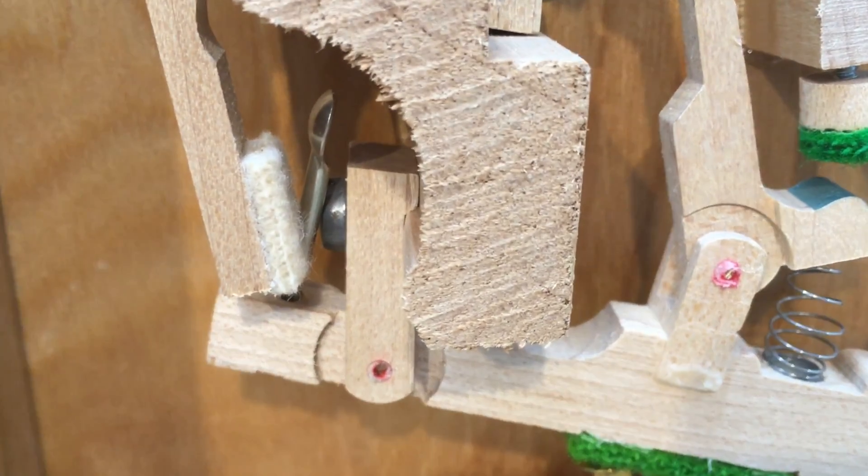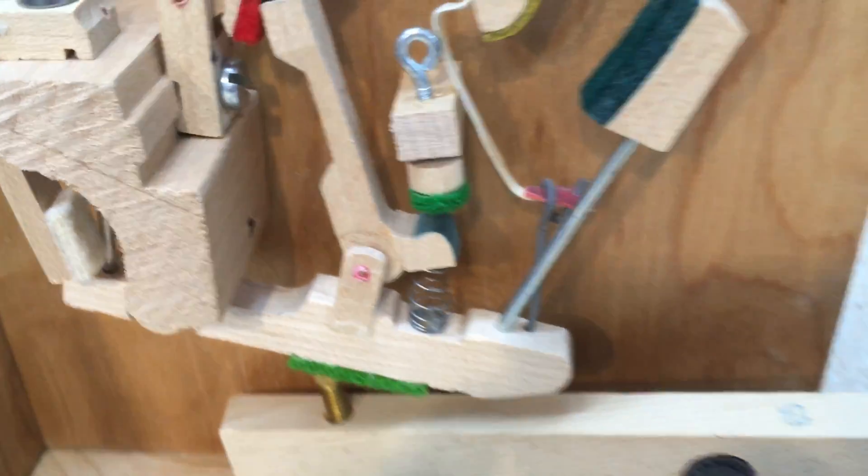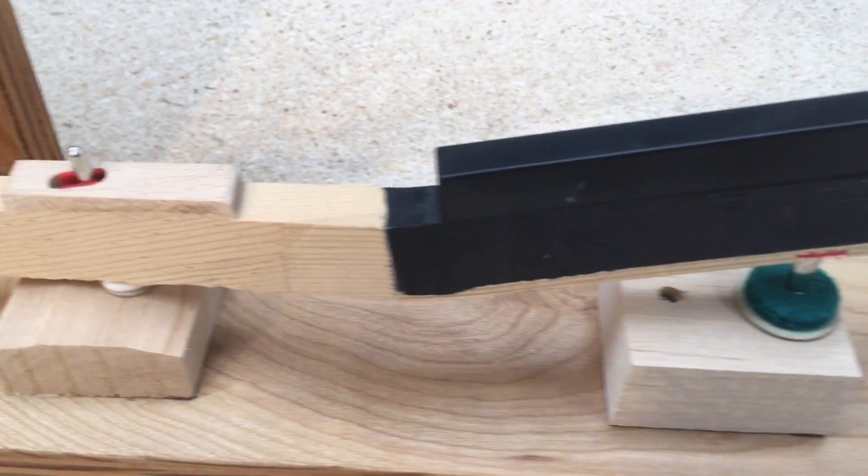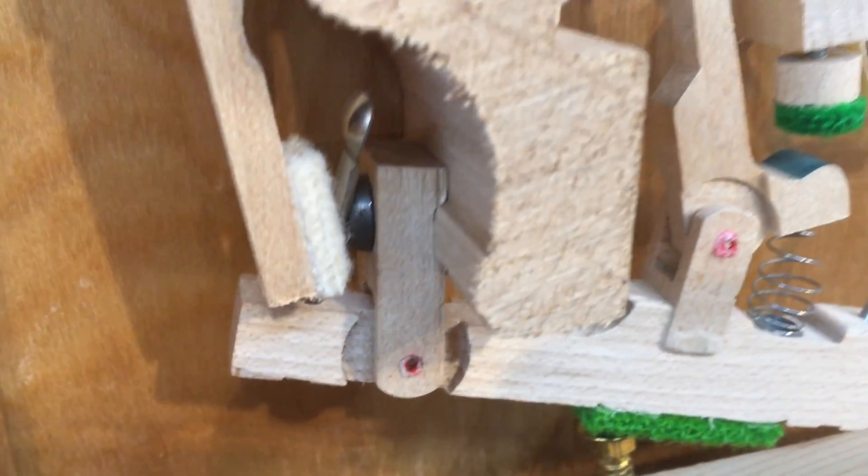These spoons actuate the damper when the key is pressed. The damper is the white cushion that rests on the strings and mutes the sound when the key is not depressed.